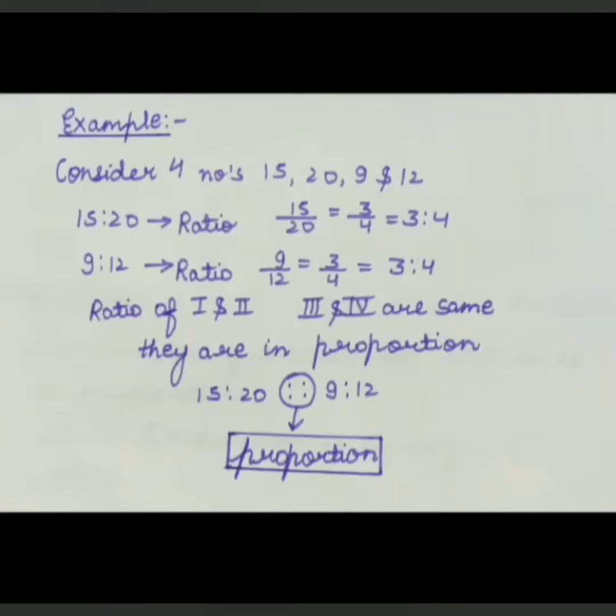So first and second and third and fourth both are in the same ratio, so they are in proportion. 15:20 is in proportion to 9:12. The middle one which I have highlighted is showing you the proportion symbol.